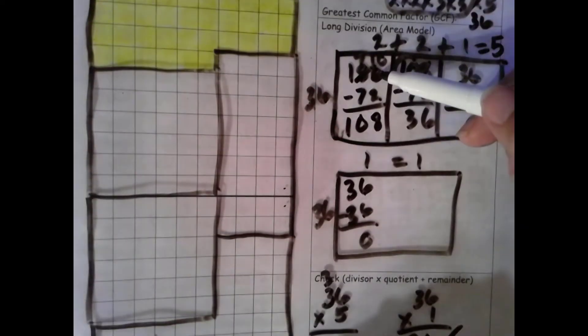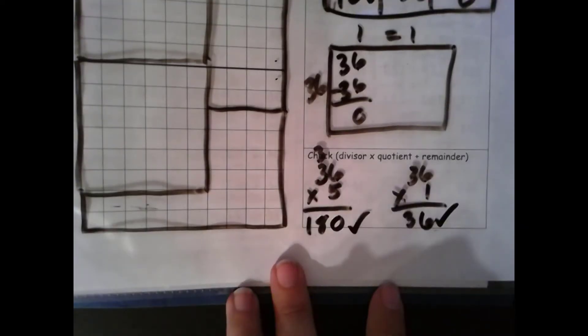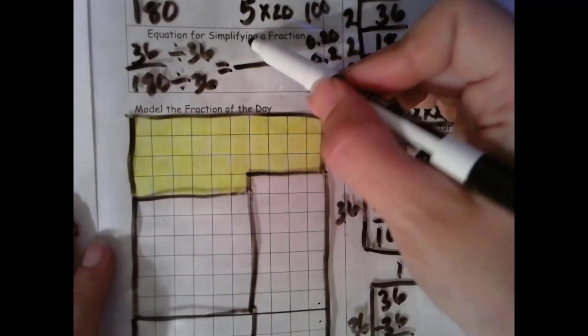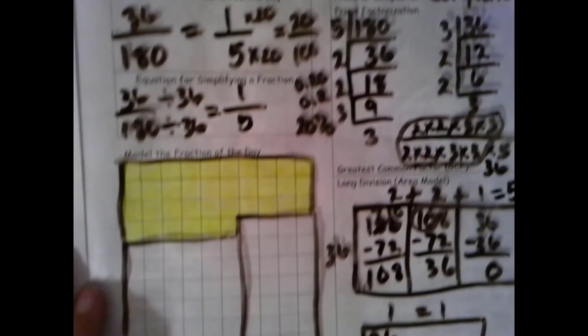180 matches our dividend up here. Check. So that means my numerator is definitely 1 and my denominator is definitely 5.